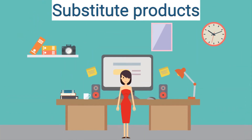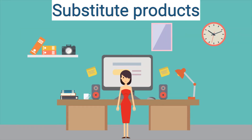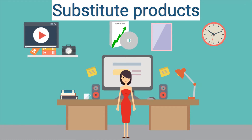The first factor you should consider is substitute products. It means that in the market, many products can replace your product and most likely would answer the same need and solve the same problem. For example, a designer versus software for automatic designs. In the web builder industry, potential customers can choose to build a website using tutorials, website builder software, or even hire a website builder.